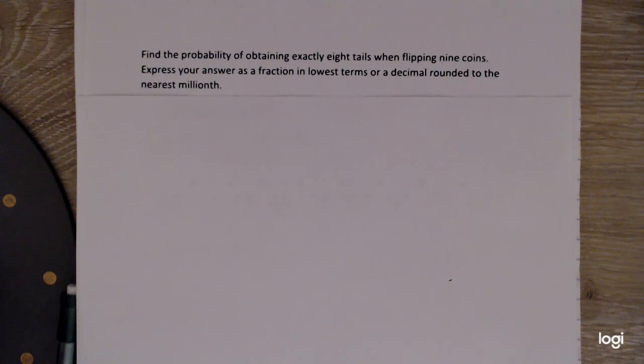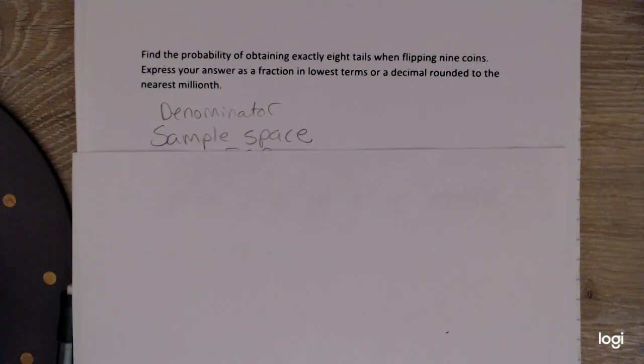Alright, so we need to find the denominator. And the denominator is going to be the sample space. So I'm going to go ahead and use something called the Fundamental Counting Principle to find that sample space. I like to abbreviate that with FCP.